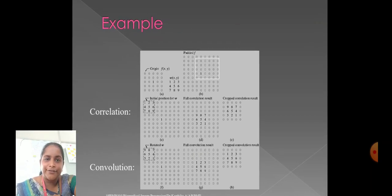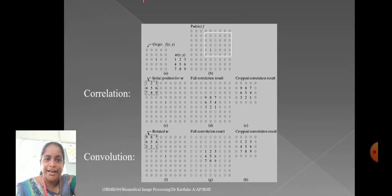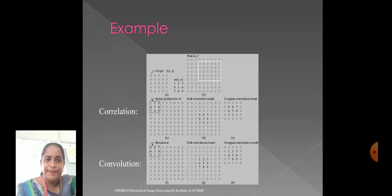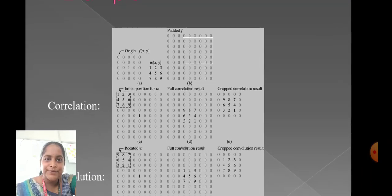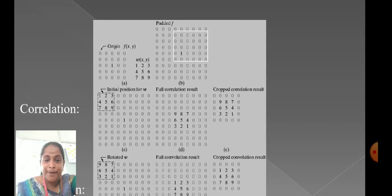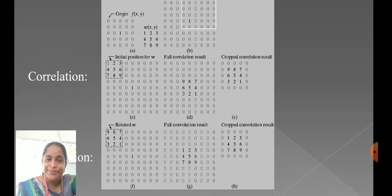Here, the convolution is equivalent to the correlation. Here, we have examples for correlation and convolution matrices. Here, we have origin, we have padded AF, and we have initial position, full correlation result, and the cropped correlation result is shown here. Related omega, full convolution result, and the cropped convolution result.